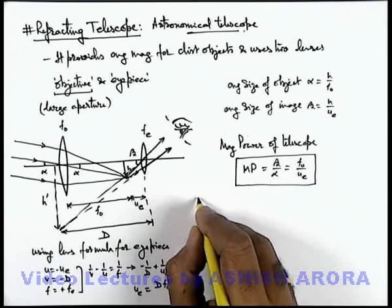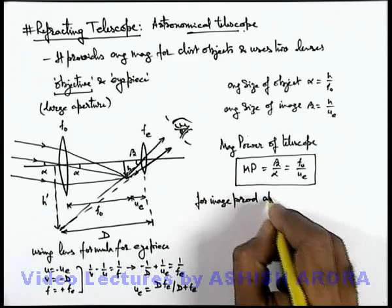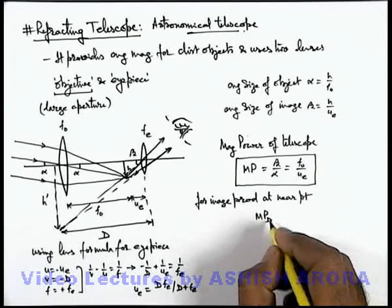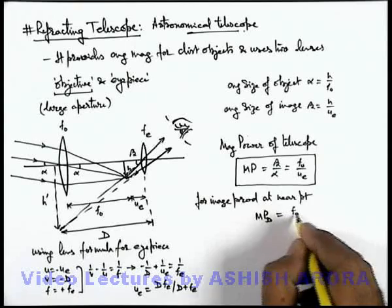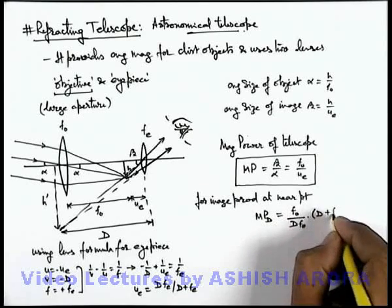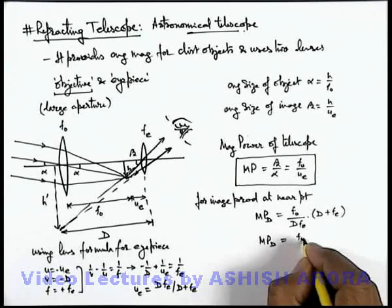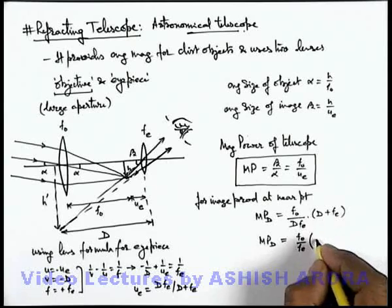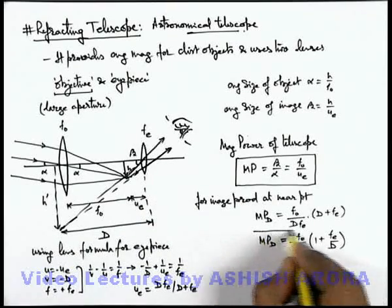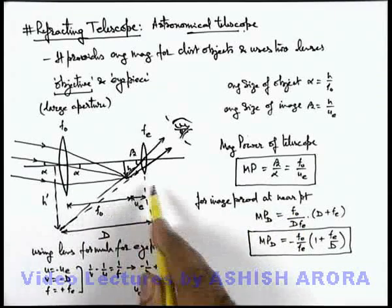If we substitute it here, for image produced at near point, the magnifying power of a refracting type telescope, written as MP for image production at point d, will be f_o by u_e. I can write as d f_e multiplied by d plus f_e. On simplifying, I am getting MP_d equals f_o by f_e multiplied by 1 plus f_e by d. And as the final image produces inverted, we can take this as negative. This is the magnifying power of a refracting type telescope when final image is produced at near point of the human eye.